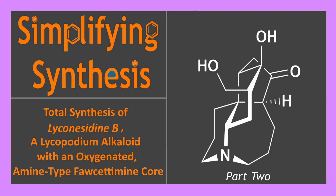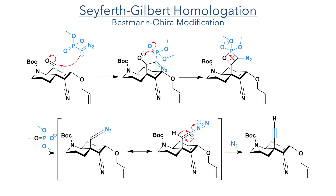Welcome back to Simplifying Synthesis, the channel where we look at complex organic chemistry and explain how it works. Last week we started the synthesis of lichenocidine B, a lycopodium alkaloid with an oxygenated amine type phosetamine core. In the last episode, we looked at the construction of a bicyclic intermediate featuring an alpha cyano allyl enol. To continue the synthesis, the next step was to react this in a Claisen rearrangement.